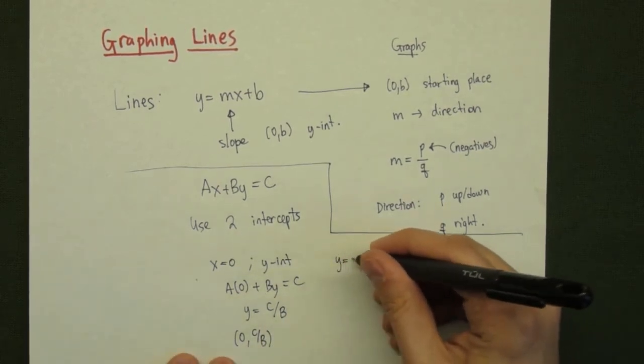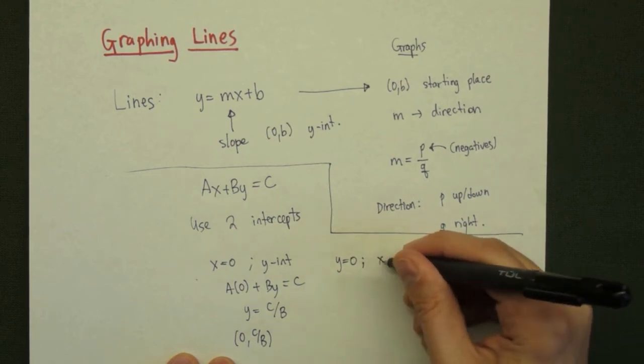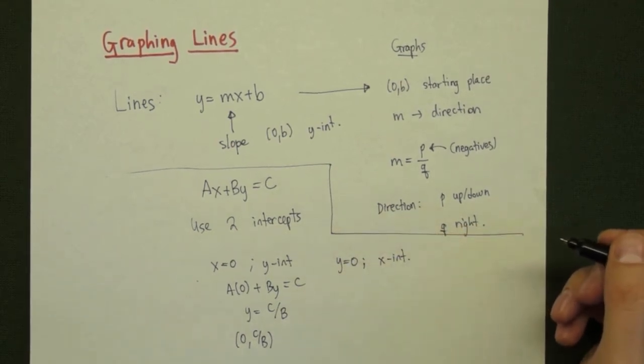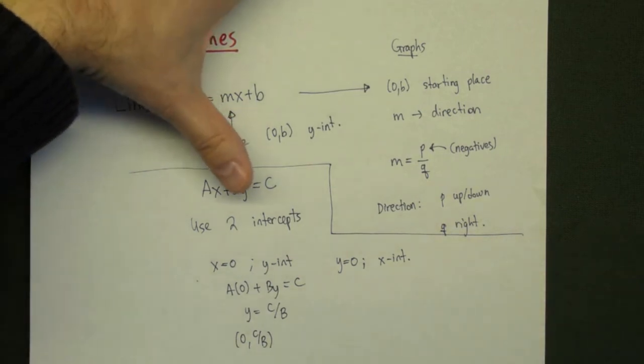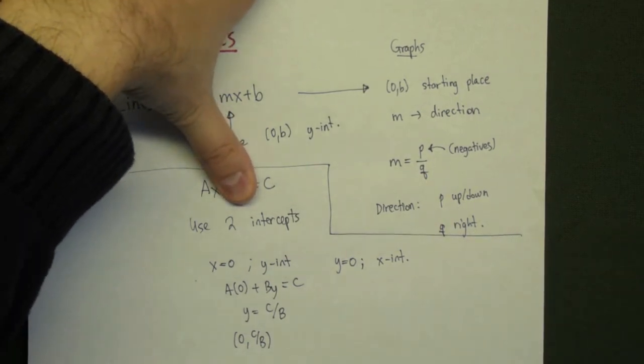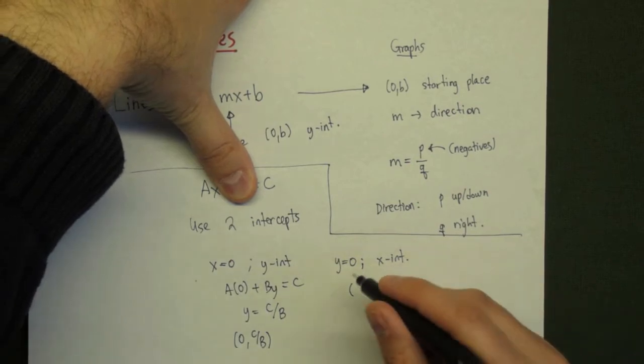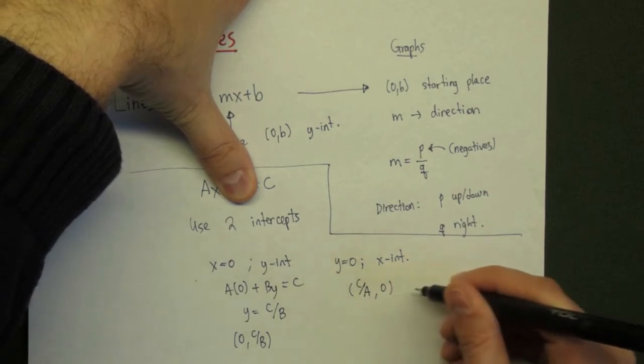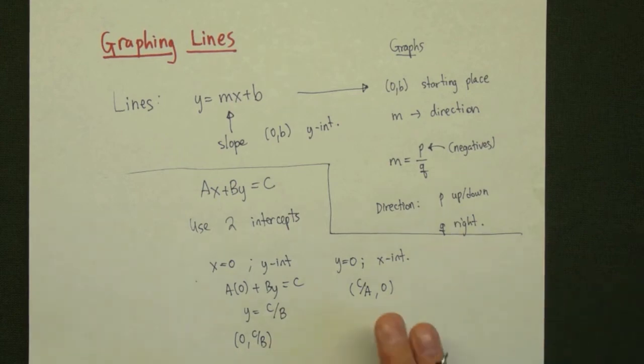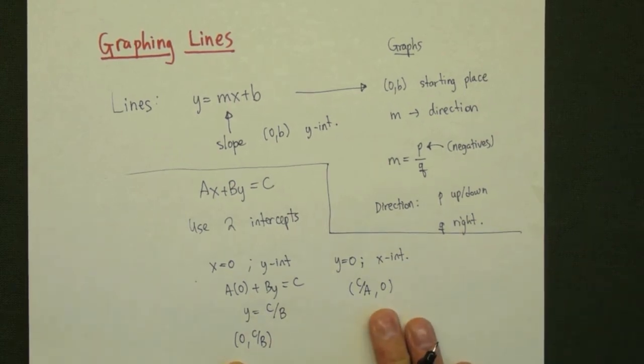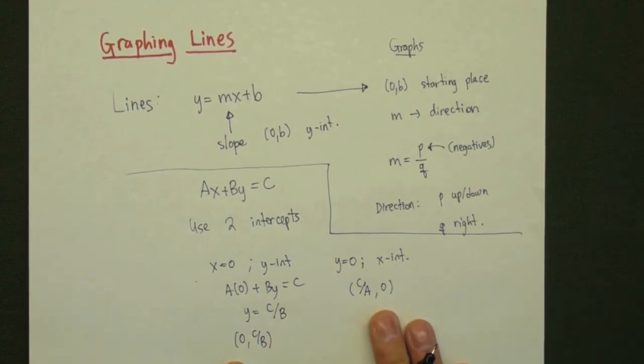We can find the x-intercept in exactly the same way. Take y equal to 0, and solve the resulting equation. So, we cover up that term in the equation. We solve what's left. We see that x has to equal c over a. And so, with these two points, we can connect them and get our graph of the straight line.